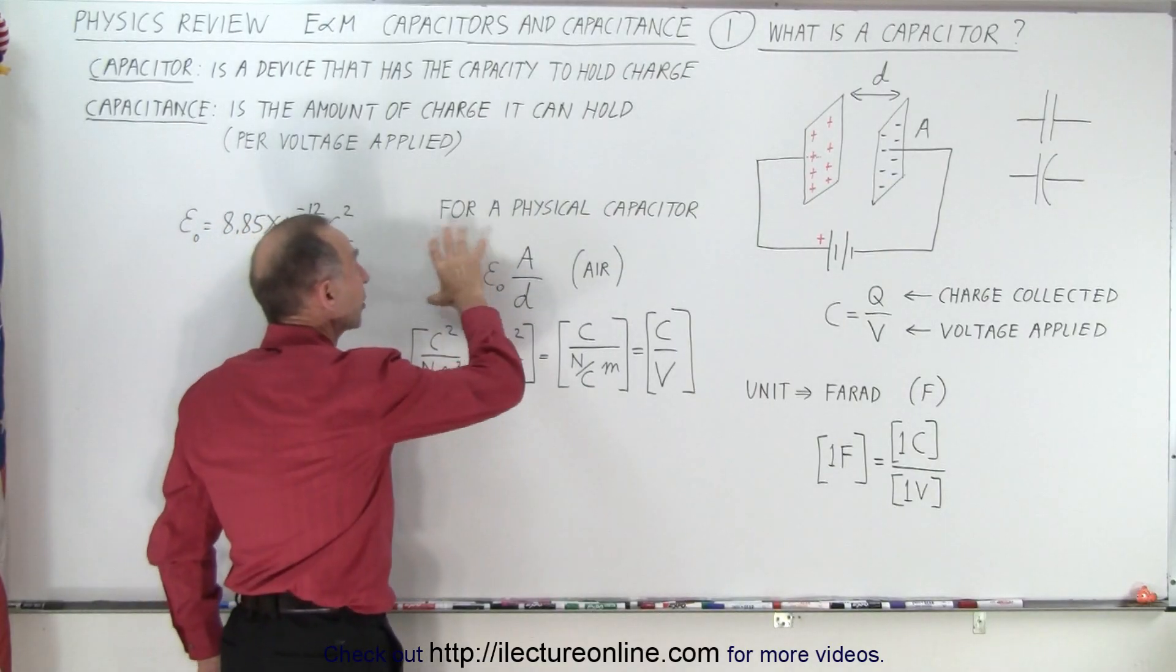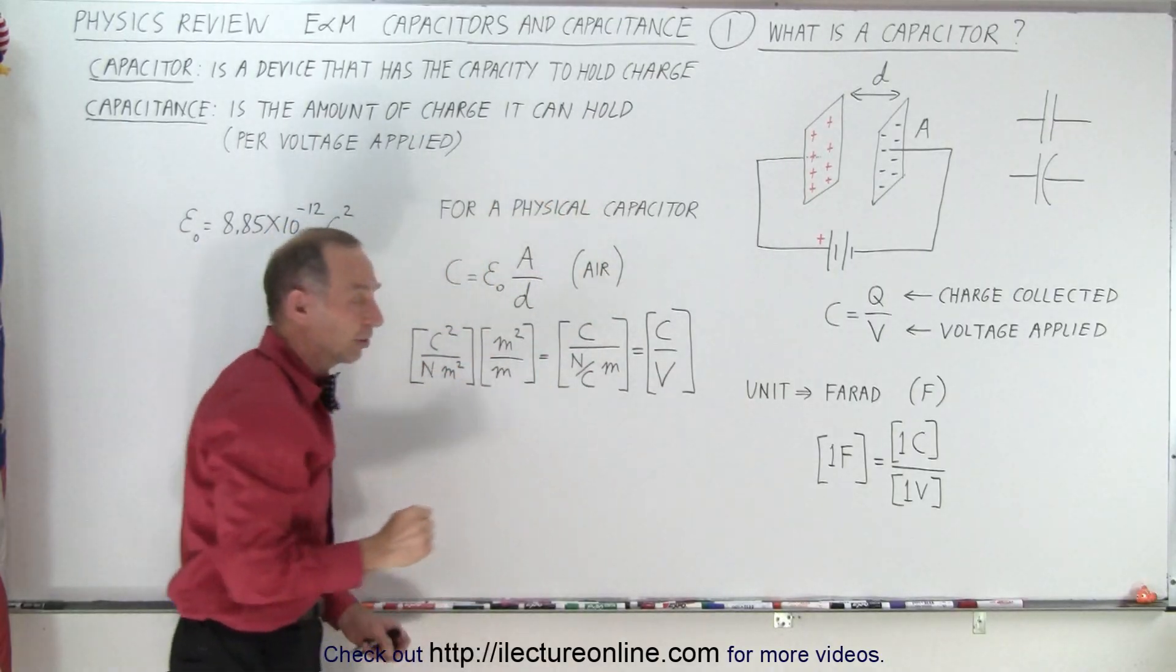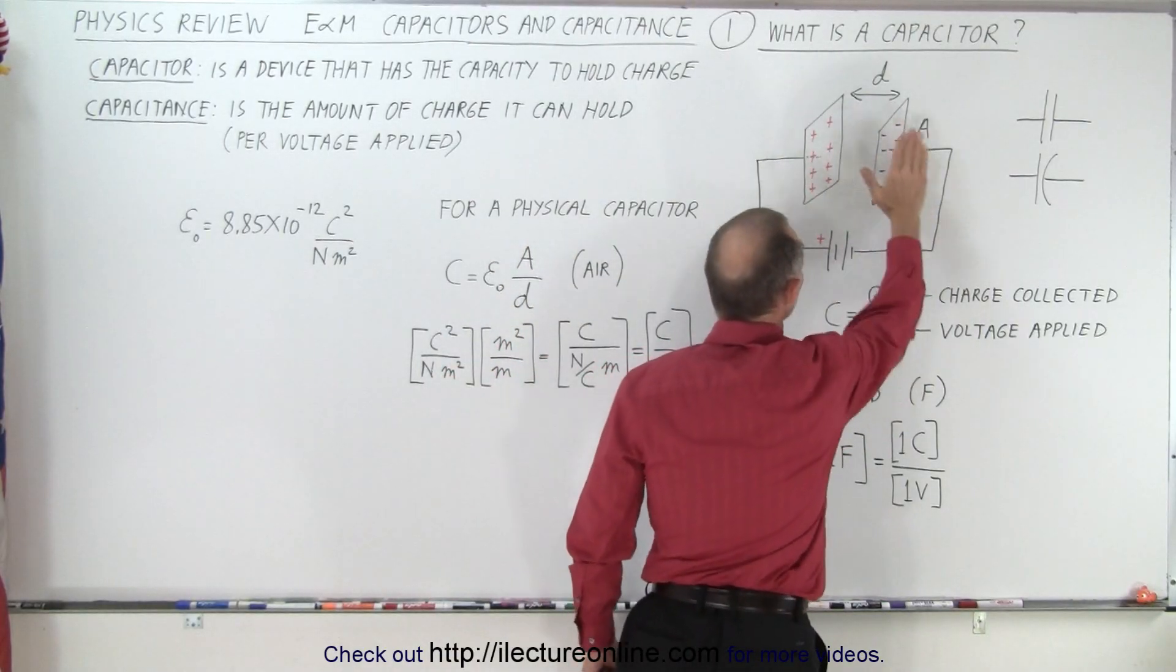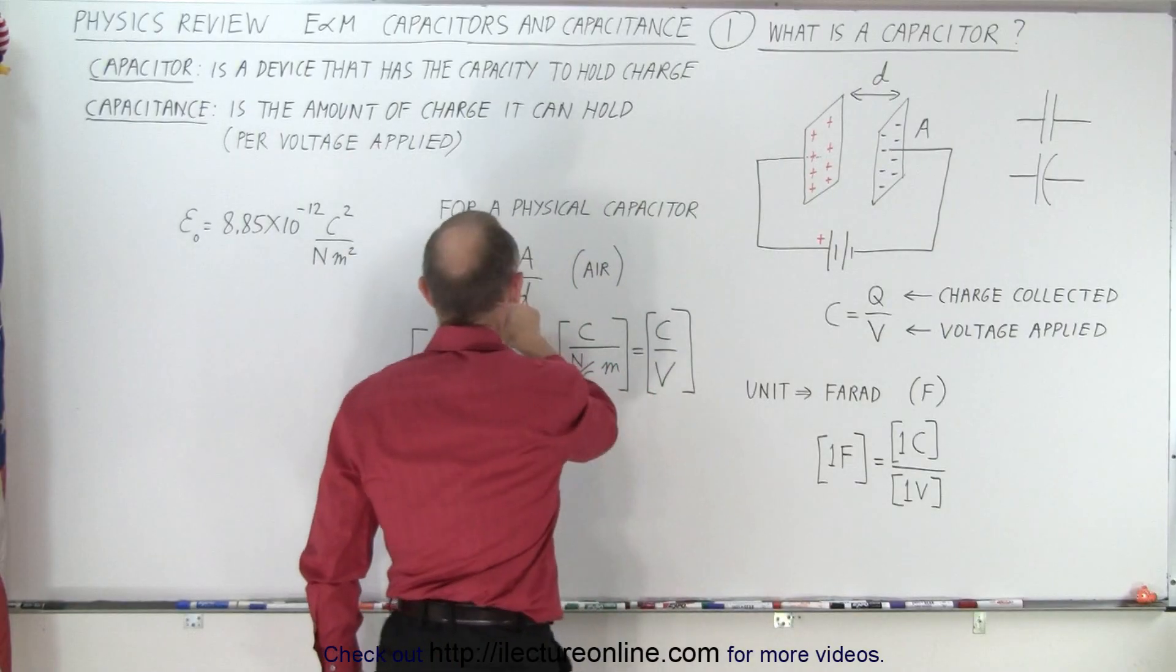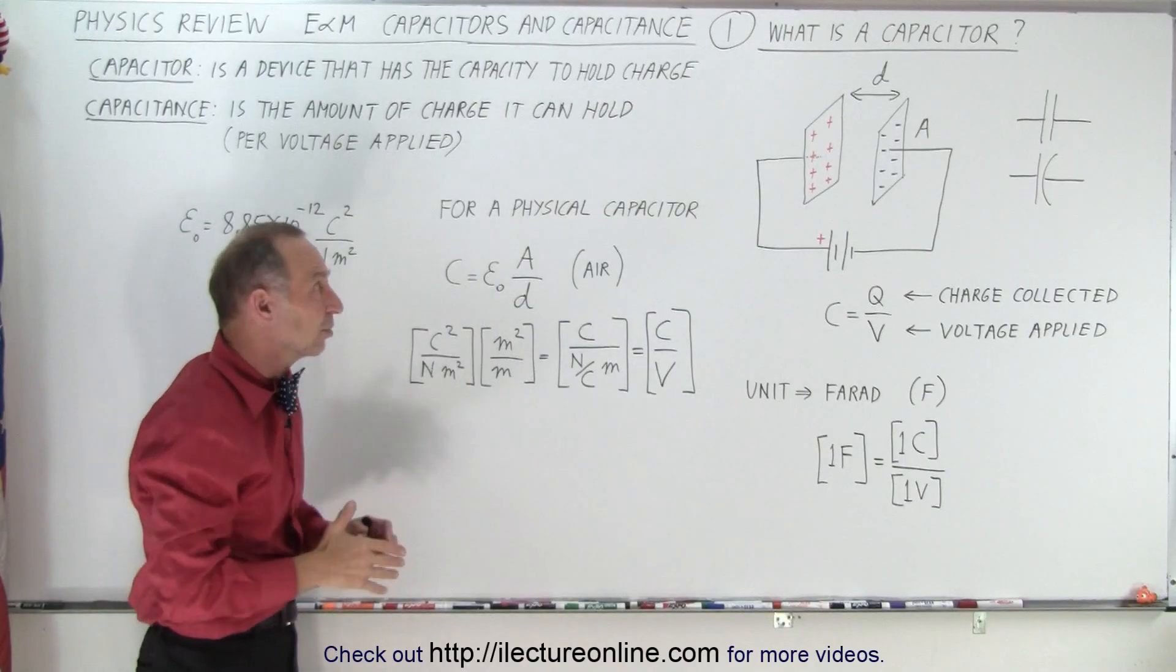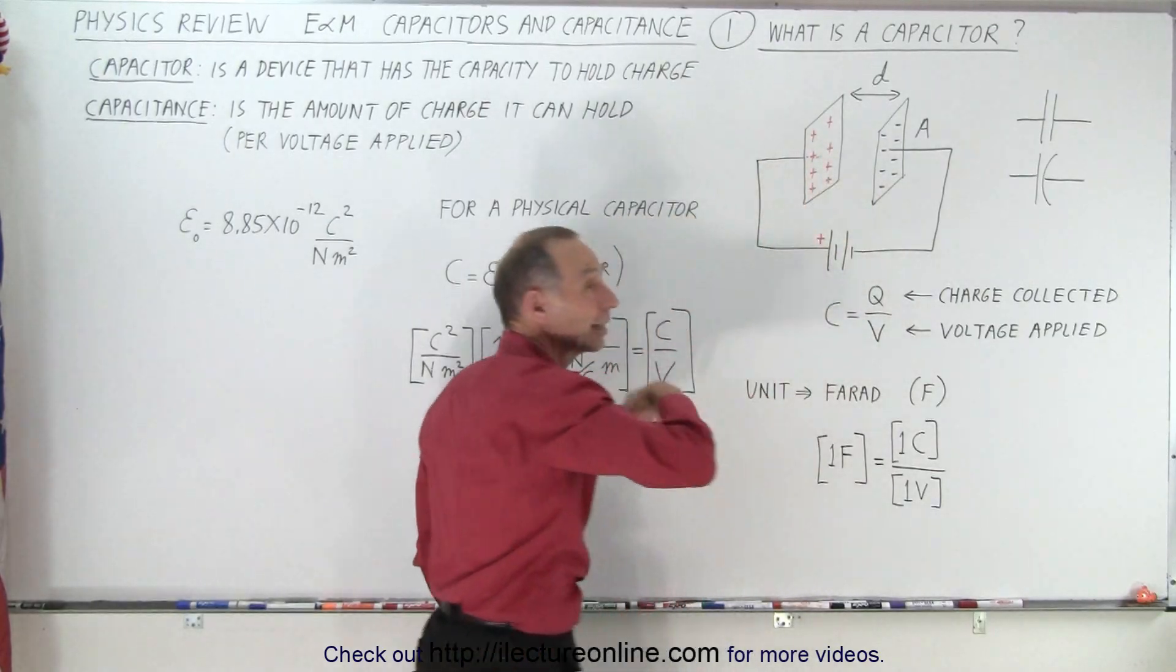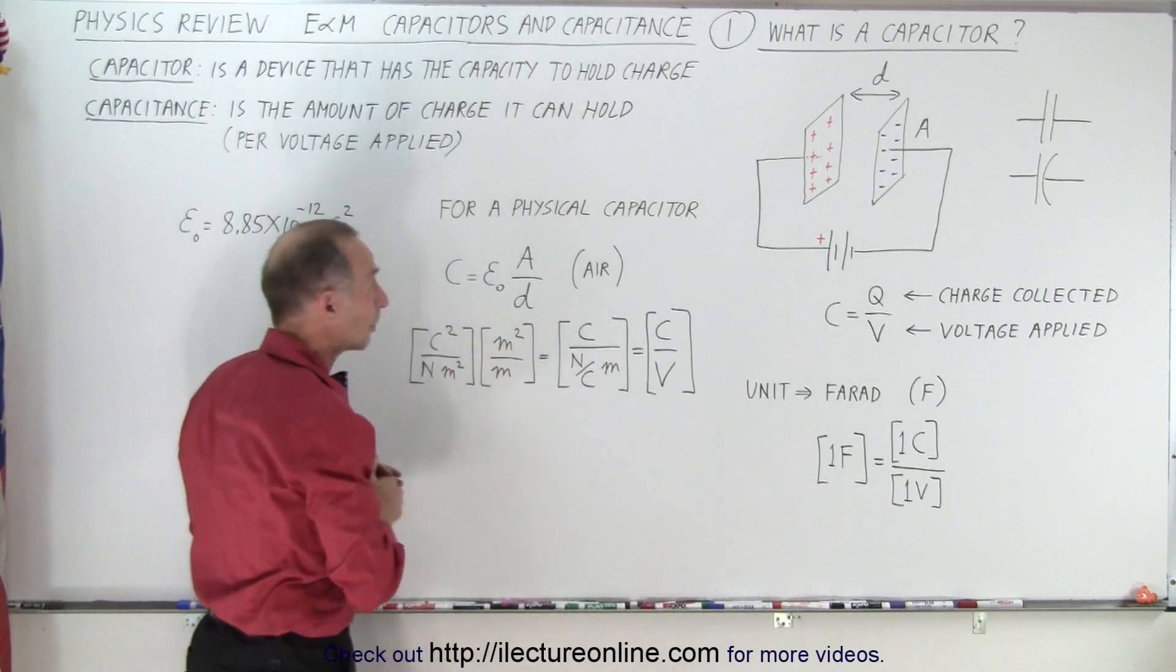The equation that we use to express what the capacitance is based on its physical characteristics. The physical characteristics would be the size of the plates, the cross-sectional area, the distance between the plates, and then the epsilon naught is the permittivity of free space. So now we're going to talk about capacitors that only have air between the plates. Later on we'll see how the equation changes when you actually put a dielectric in between the plates.